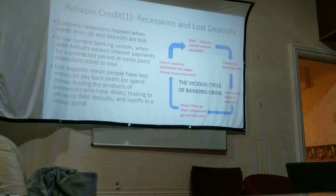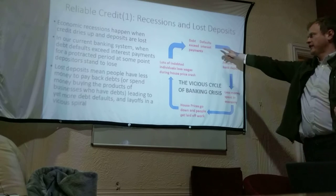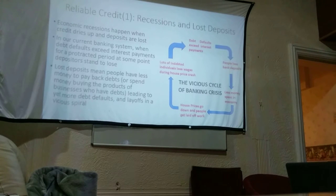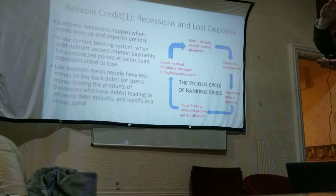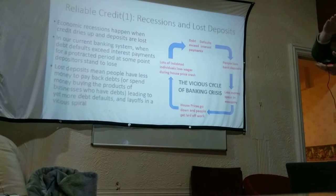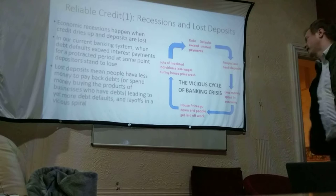Reliable credit. Recessions and lost deposits. The way recessions happen is that if debt defaults exceed interest payments for a wide variety of banks, then people lose their bank deposits. Initially, the debt defaults eat into the capital buffer of the bank, and when it runs through the capital buffer, then people lose their bank deposits.